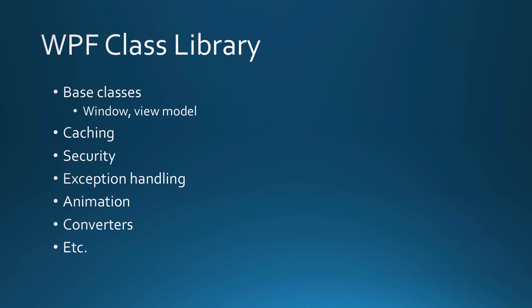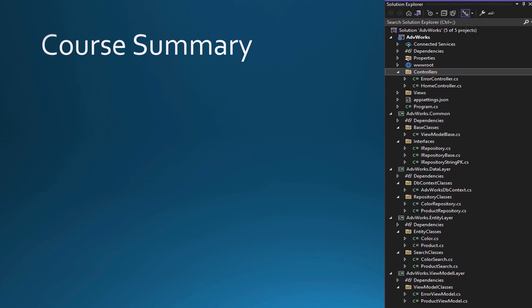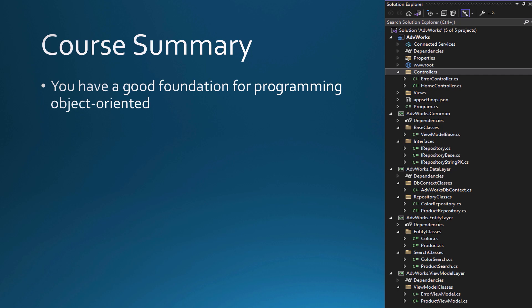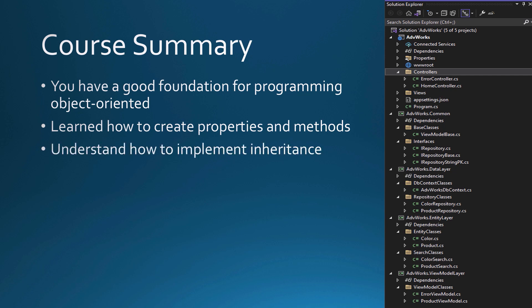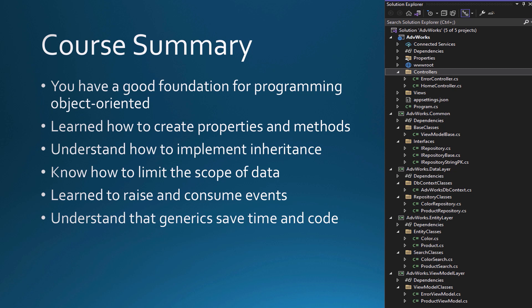In this lesson, we learned why class libraries are important, about the most common types of class libraries you're going to create, and then we created a common class library. We've covered quite a lot in this course — you should now have a very good foundation for object-oriented programming. You've learned properties and methods, inheritance, limiting scope of data, raising and consuming events, generics, and how class libraries help organize your classes.